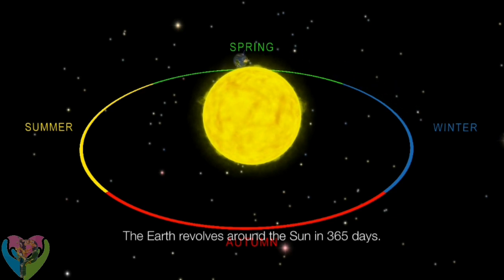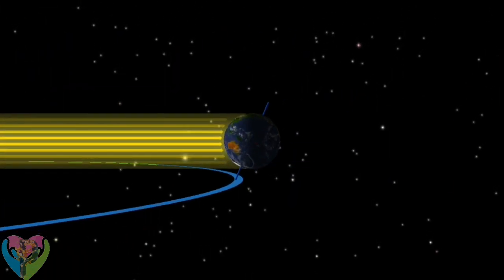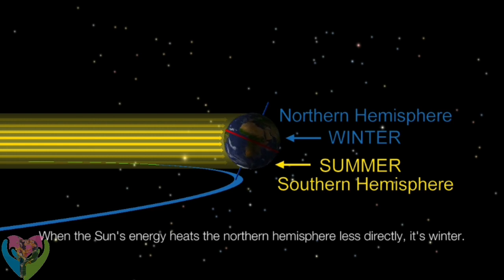The Earth revolves around the Sun in 365 days. When the Sun's energy heats the northern hemisphere less directly, it's winter.